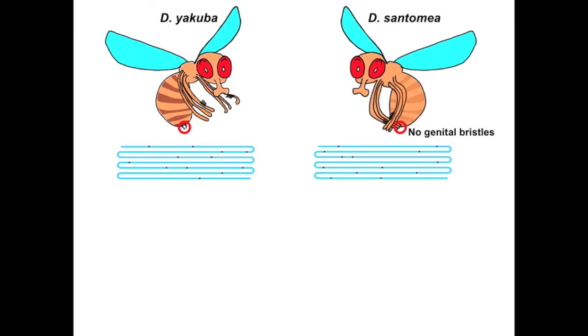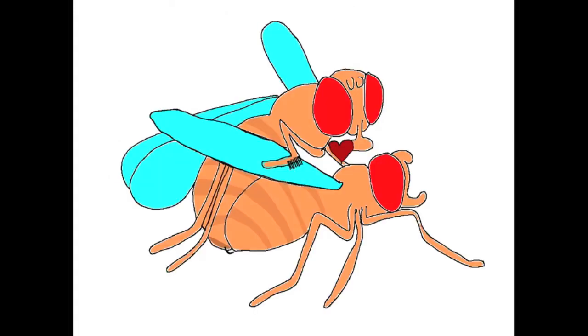On the other hand, Drosophila santomea has more sensory bristles on their forelegs than does Drosophila yakuba. Both types of bristles are found only in males and appear to be used to grasp the female during copulation.